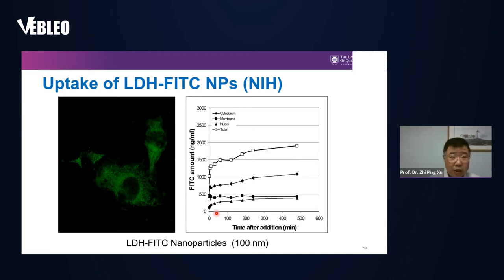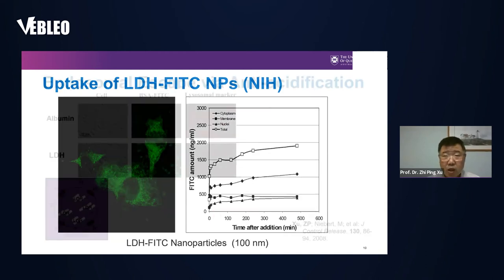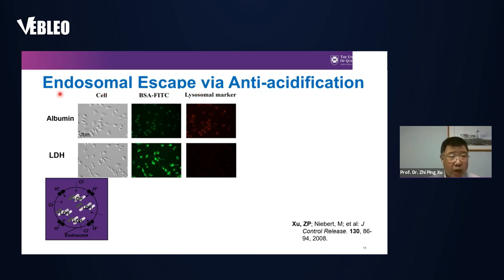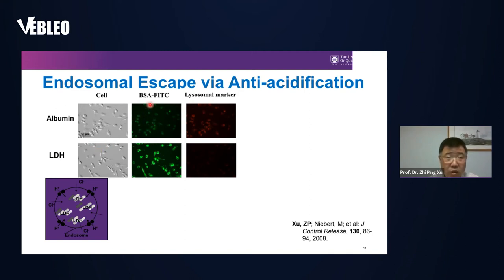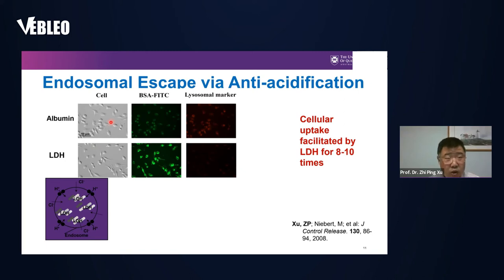The reason for this rapid uptake is that these nanoparticles have anti-acidification properties that help them undergo endosome escape. Comparing albumin (BSA, ~3–5 nm) with LDH (~100 nm) using FITC-tagged BSA, the green fluorescence in the albumin case is quite low, while in the LDH case the green color is very strong — about 8 to 10 times difference in uptake amount. So LDH provides very strong facilitation for albumin uptake by cells.